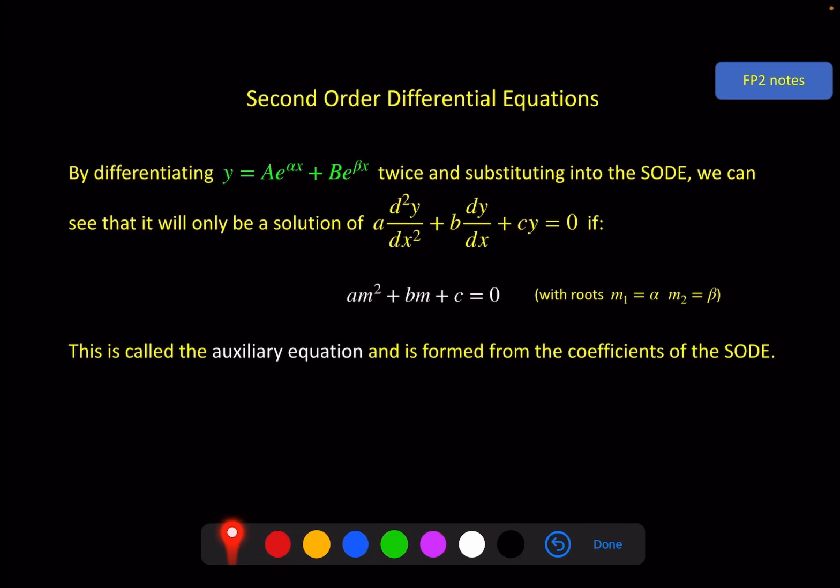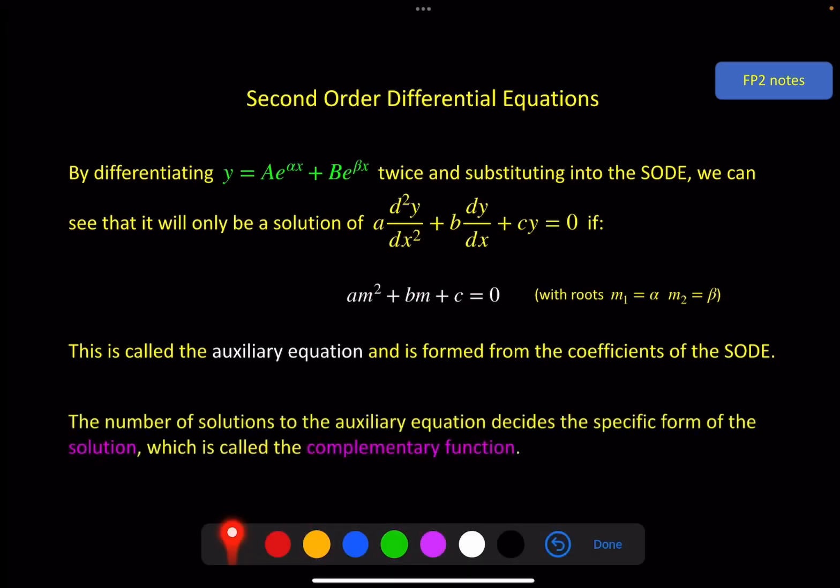This is called the auxiliary equation and is formed from the coefficients of the second order differential equation. I'll do a quick example of this on the next screen but keep in mind we're not quite finished yet because I did say this was not the only type of function that could do this, interact with its own derivative. You know that sine and cosine differentiate to give cosine and sine respectively. They could potentially interact with themselves. And if you've got xe^x when you differentiate that you get e^x which could interact with one of these but it also gives another xe^x so that could interact with itself as you differentiate it. We find that the number of solutions to the auxiliary equation decides which of those specific forms it is.